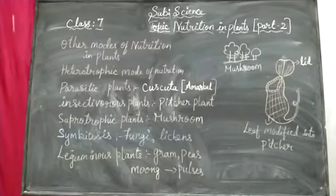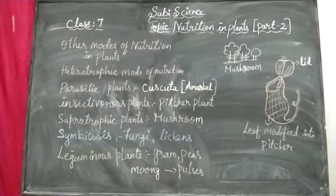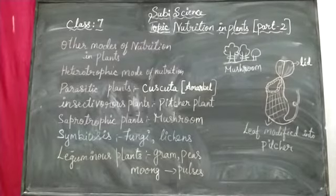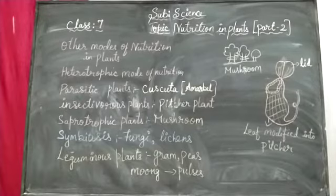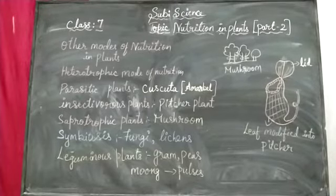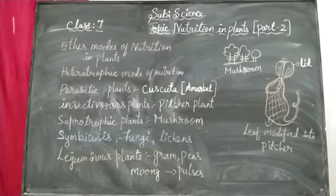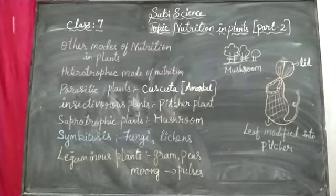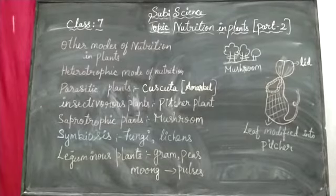Assalamualaikum, I welcome you all for Class 7 subject Science, topic is Nutrition in Plants. This is a continuation of Part 1, where we had learned about autotrophic nutrition and heterotrophic nutrition. Autotrophic nutrition means preparing their own food — organisms that do this are known as autotrophs. All green plants are known as autotrophs.